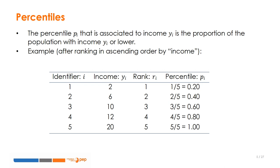By using the previous example and after ordering the incomes in ascending order, we can easily identify the rank and the percentile associated with each person. For instance, the individual with an income equal to 10 has the rank of 3 and the 60th percentile. In other words, 60% of individuals have an income of 10 or less.